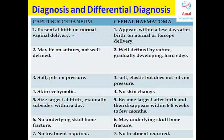Caput succedaneum is present at birth, whereas cephalohematoma takes time to appear because subperiosteal bleeding is a slow process. Cephalohematoma takes the shape of the bone, develops gradually, has hard edges, and does not cross sutures. Caput succedaneum may lie on or cross sutures but does not have well-defined borders. Caput succedaneum is a soft mass that pits on pressure, while cephalohematoma does not pit. Cephalohematoma has no skin changes, whereas caput succedaneum may show ecchymosis or petechiae.